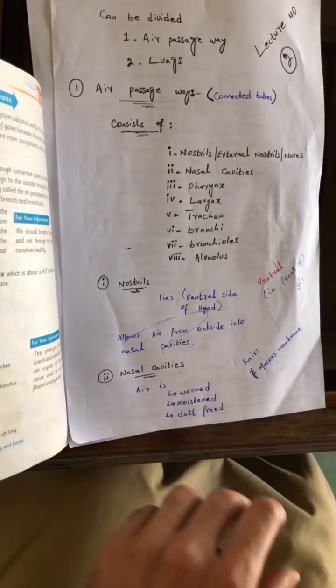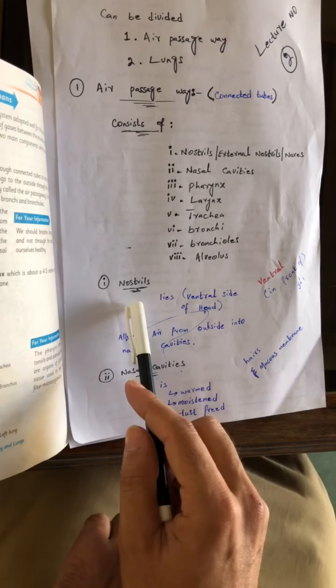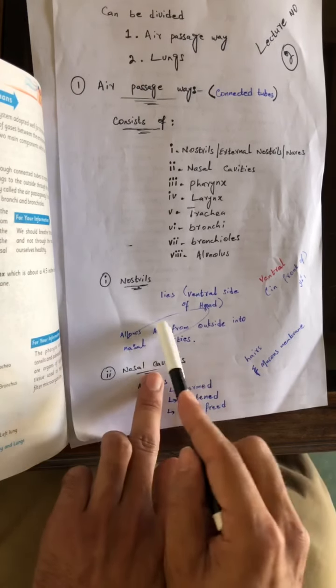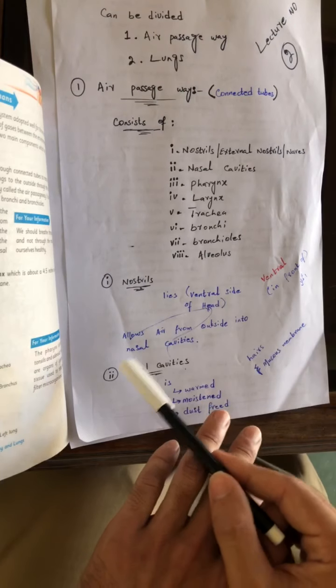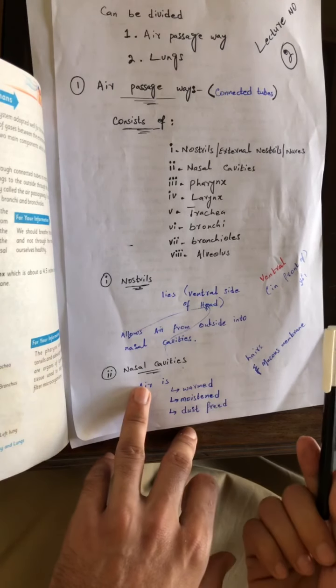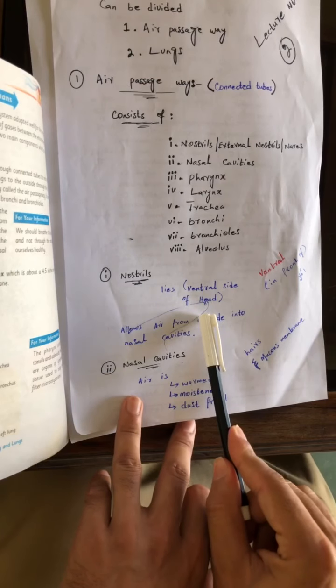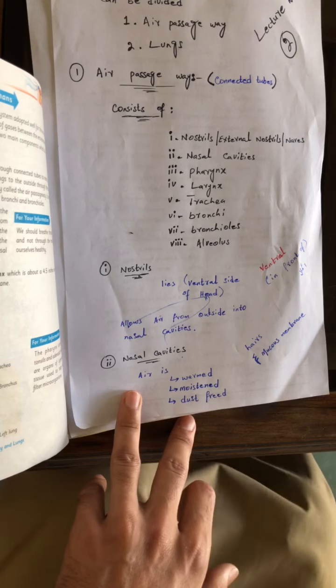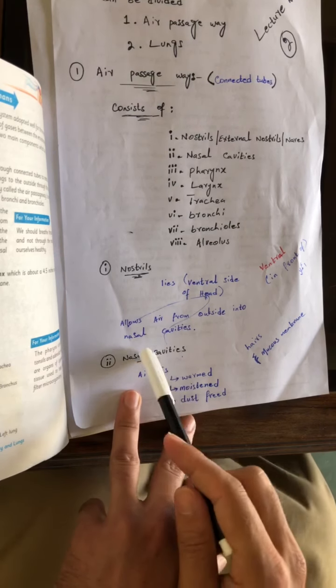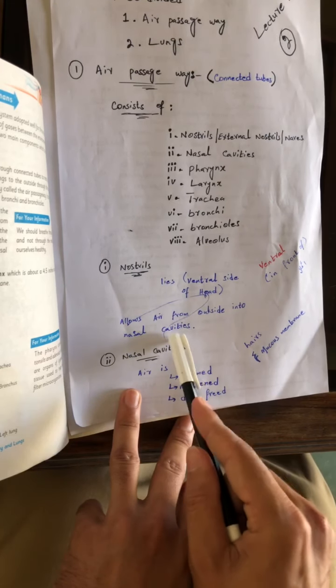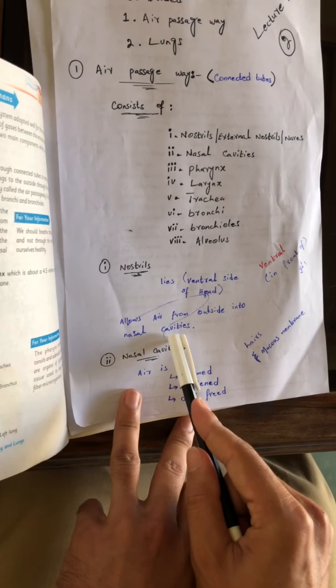First, the nostrils. Nostrils are called external nostrils, which are also known as nares. These nostrils lie on the ventral side of the head. Ventral means in front of. This is a moveable part. Its function is that it allows air from outside into nasal cavities.